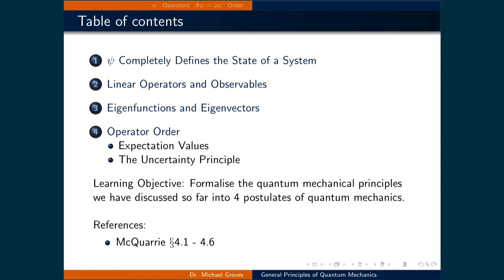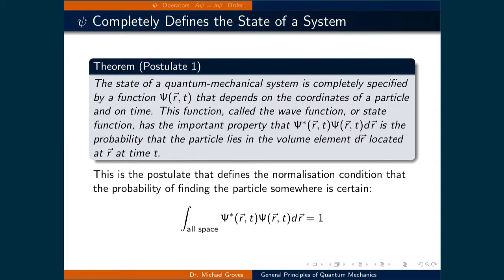We will also define what an operator is and what it means to use them. The first postulate we can define right away. It is stated as: the state of a quantum mechanical system is completely specified by the function psi of r and t, and it depends on the coordinates of a particle and on time.